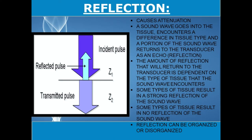Reflection is the second factor causing attenuation. A sound wave goes into the tissue, encounters a difference in tissue type, and a portion of the sound wave returns to the transducer as an echo — a reflected sound wave — while the other portion travels deeper into the tissue. The amount of reflection that returns to the transducer is dependent upon the type of tissue that the sound wave encounters, with some tissues producing a strong reflection and some producing no reflection. This is how we get our different types of echogenicity.